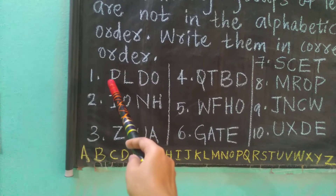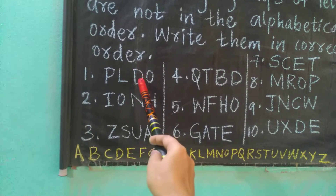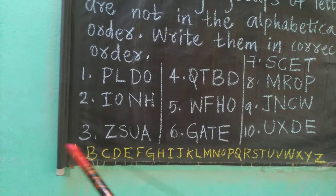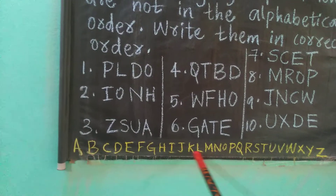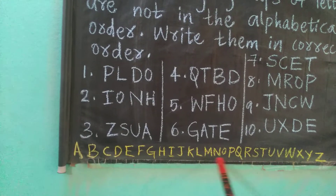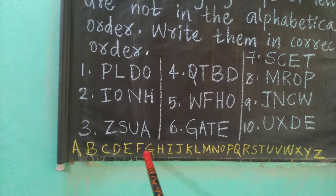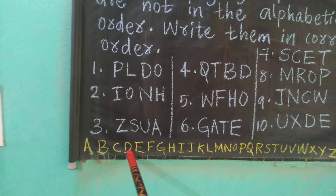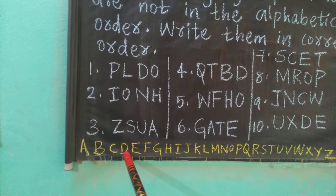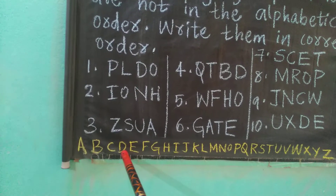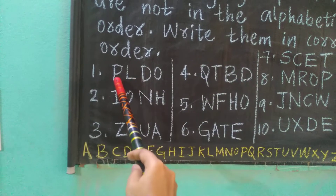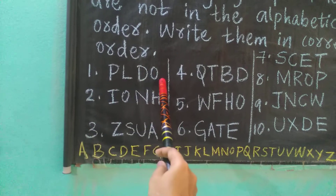Will P come first, or L, or D, or O? If we check the series, tell me which letter will come first. D is coming first, so D will be the first letter. And after D, how many letters are left over? P, L, O.